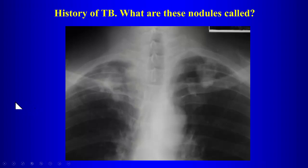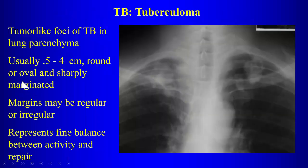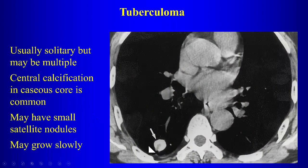Some patients with TB develop larger nodules called tuberculomas — tumor-like foci of TB that can contain living organisms. These can enlarge over time or calcify. They may have central calcification, a caseous core, and small satellite nodules, and they may grow slowly.